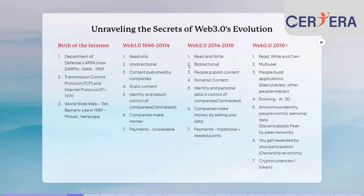The next version, which started around 1996, is what we call Web 1.0. It was read-only — you could only see information going one way, from the provider to you. There was no way to give feedback, and information was not dynamic. Once you put in that information it stayed there unless somebody went and changed it — so it was static content. You had to log in, providing data including your IP address, username, email ID, and so on.